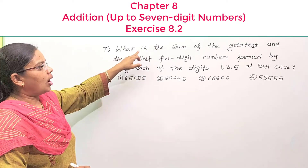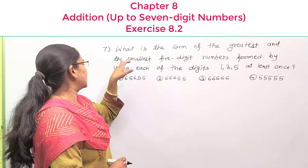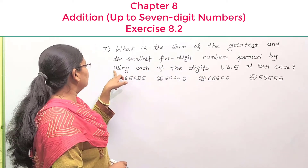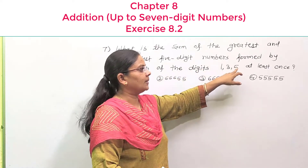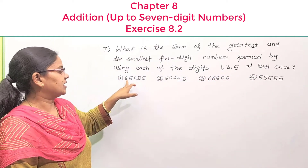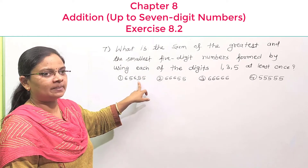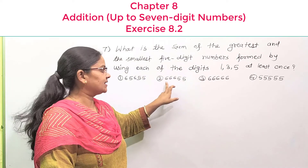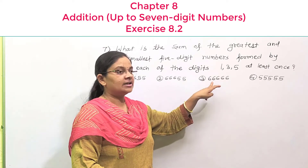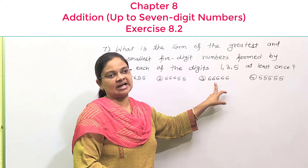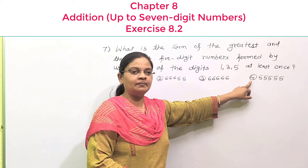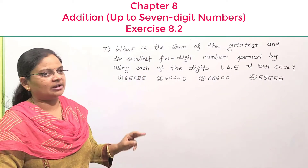Question number 7: What is the sum of the digits of the smallest 5-digit number formed using each of the digits 3, 5 and its marks? Option number 1: 6,655. Option number 2: 66,655. Option number 3: 66,666. And option number 4: 55,558.